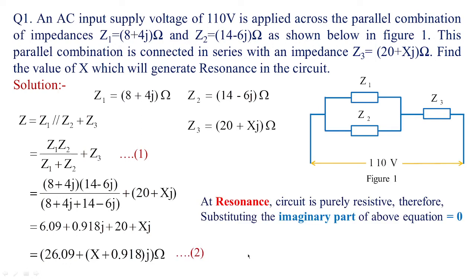Under resonance, the circuit is purely resistive and the imaginary part should be equated to zero. The impedance of the circuit will be completely resistive when this imaginary part goes to zero. With that, x is equal to minus 0.918 ohms. This is how we solve a basic problem pertaining to resonance.